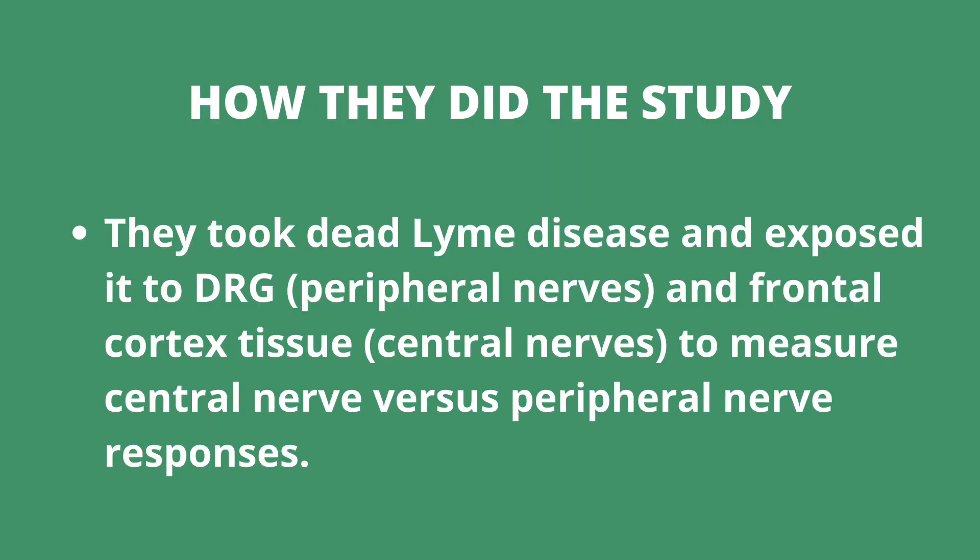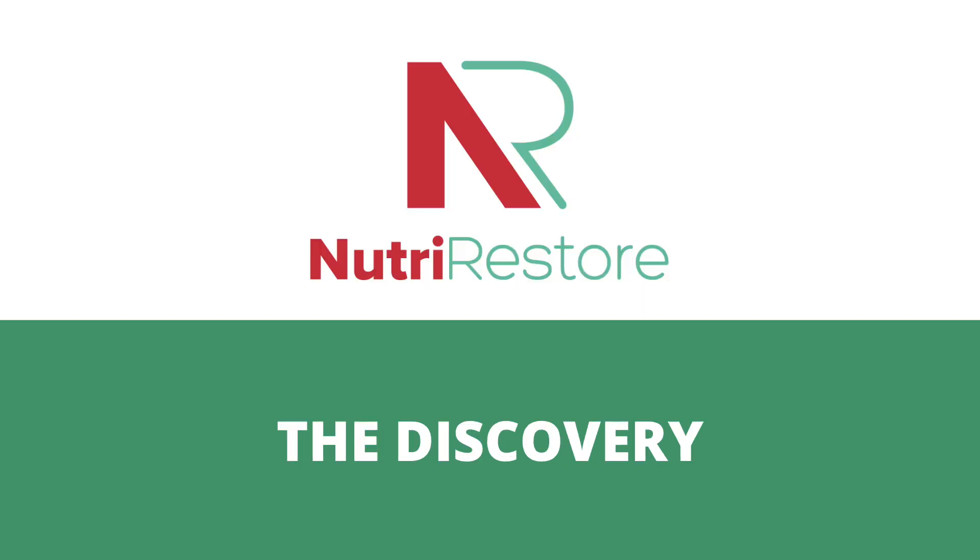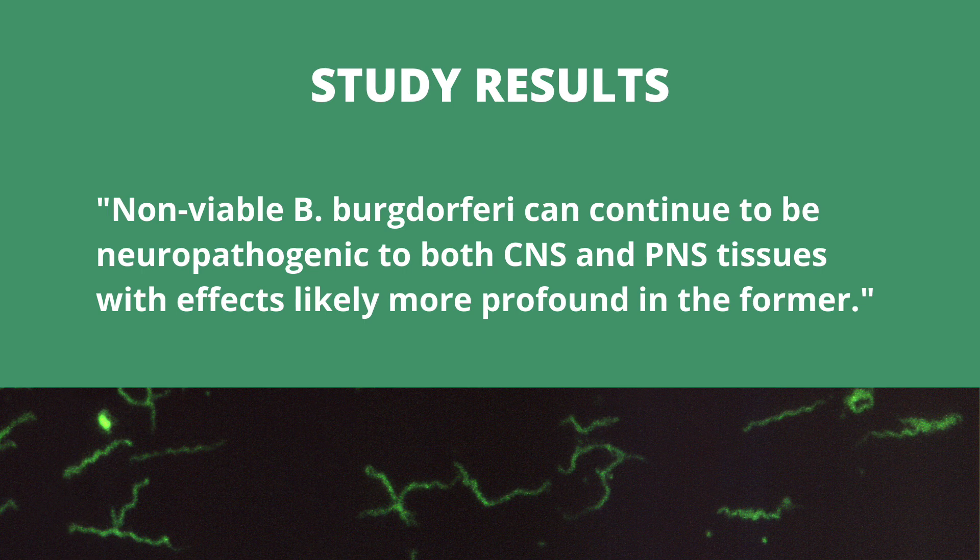So let's dive into the study. How did they do it? They're injecting dead and living Borrelia into different nerve tissue, measuring 26 different kinds of inflammation. Let's look at what they found. We found that the dead Lyme caused more inflammation than the living Lyme. This is a big deal. It means you may have more problems even after you've killed it than you did before you killed it.